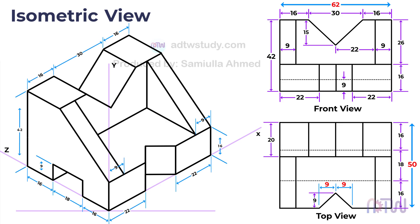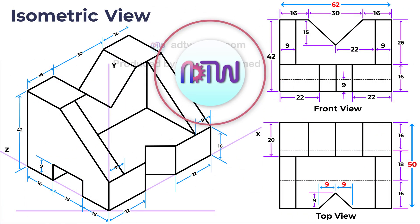This completes the isometric view for the given orthographic projections. Lastly, add dimensioning to the isometric view to represent the width, length, and height of the object. This is the final required isometric view. I hope this tutorial helped you understand how to construct the isometric view of an object from its orthographic projections.